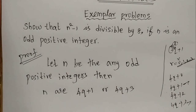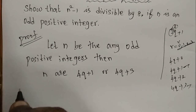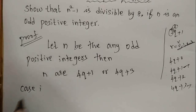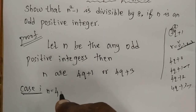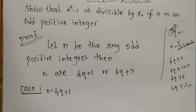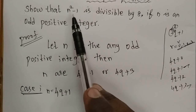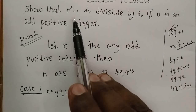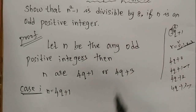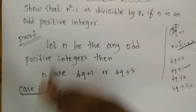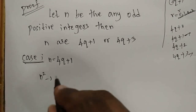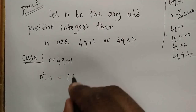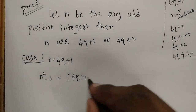Case 1: n = 4q+1. We substitute this n value into n² - 1 and show it is divisible by 8. Substituting: n² - 1 = (4q+1)² - 1.